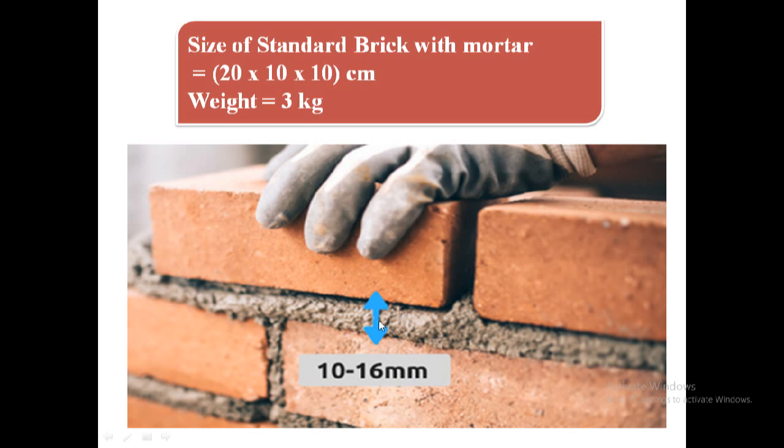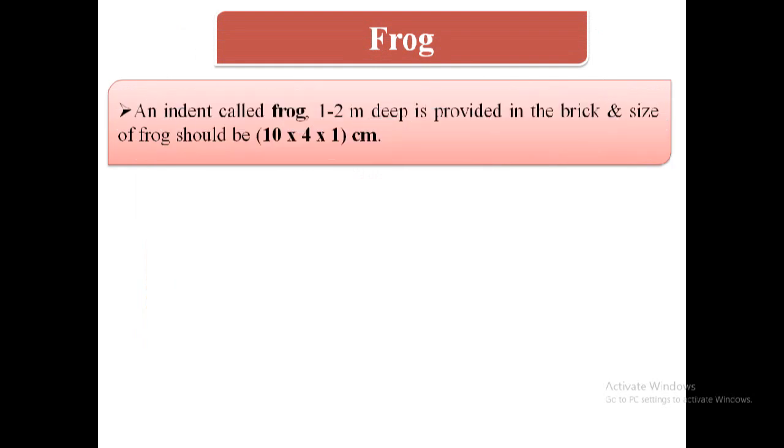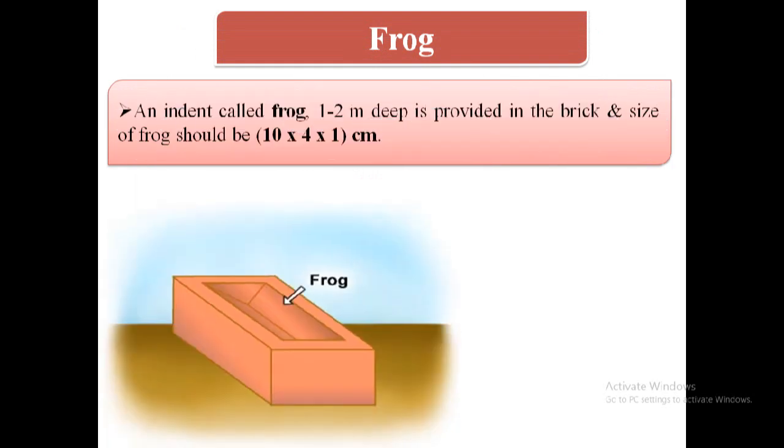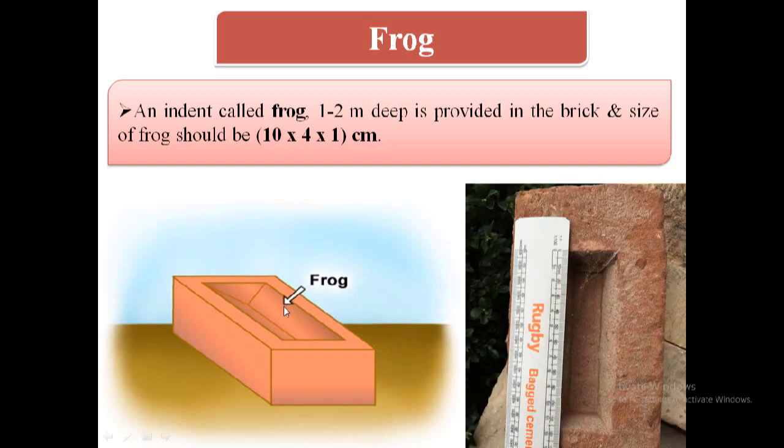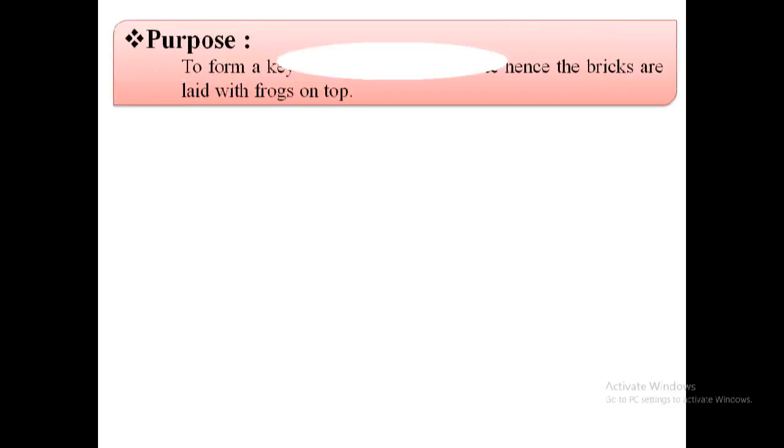Frog in brick: an indent called frog, 1 to 2 centimeter deep, is provided in the brick. In this image we can see here this is the frog, and size of frog should be 10 by 4 by 1 centimeter. Purpose of providing frog is to form a key for holding the mortar, and therefore the bricks are laid with frogs on top.